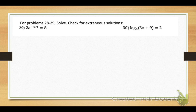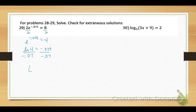Numbers 29 and 30: solve these equations and check solutions. Number 29: isolate t by dividing both sides by 2 — e raised to the negative 0.07t equals 4. Rewrite in logarithm form: natural log of 4 equals negative 0.07 times t. Divide both sides by negative 0.07. Using a calculator: t equals approximately negative 19.8. Check: plug back in — 2 times e raised to (negative 0.07 times negative 19.8) gives nearly 8 (about 7.99), which checks out.